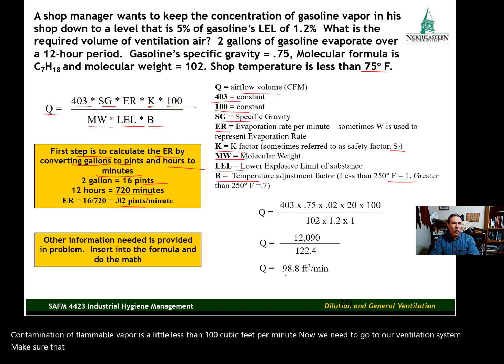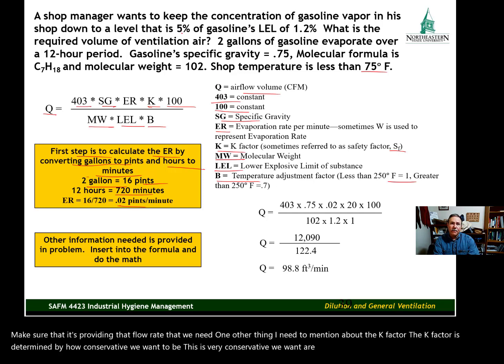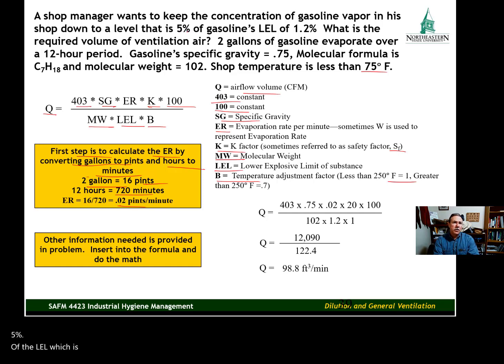One other thing I need to mention about the K factor. The K factor is determined by how conservative we want to be. This is very conservative—we want our flammable vapor concentration to be 5% of the LEL, which is very conservative. It could be 50% of the LEL and that would still probably be satisfactory as far as avoiding the potential for flammable vapors to be ignited.